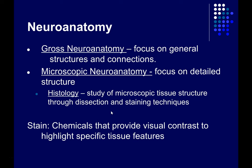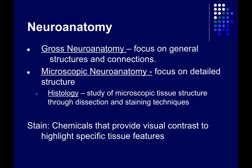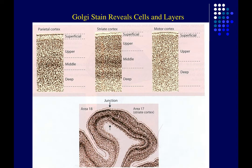One of the chief tools used in histology is the use of stains — special chemicals that provide visual contrast to highlight specific features within the tissues you're studying. It's often difficult to discriminate one type of cell from another, or parts within a cell from one another. There's not a lot of contrast that occurs naturally when looking at slides of thinly sliced tissue, but stains allow you to really highlight specific aspects. One type of stain we've already talked about is the Golgi stain.